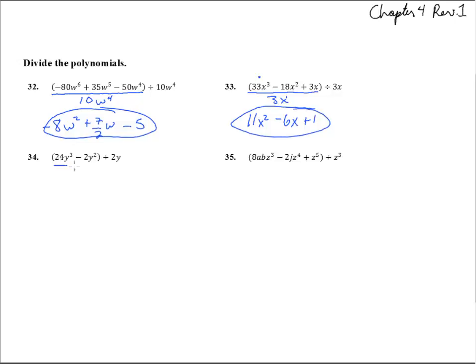Number 34, we're going to divide all these by 2y. If you'd like to think of it as dividing by 2y and dividing by 2y, almost like a distributive property, that's exactly what we're doing. This will be 12y squared, and then the 2s will cancel, so we'll just be left with a 1y left on that one.